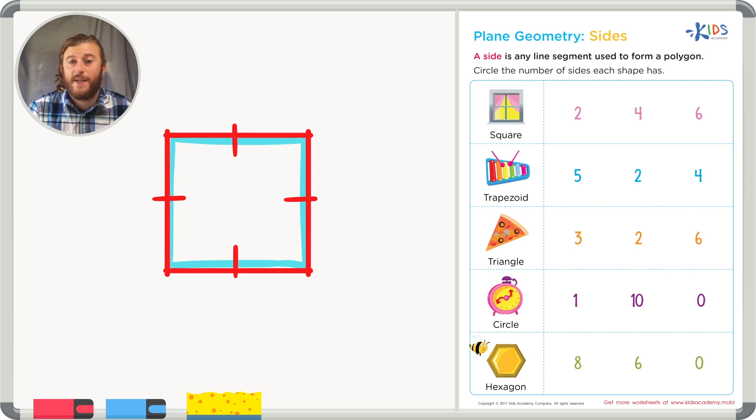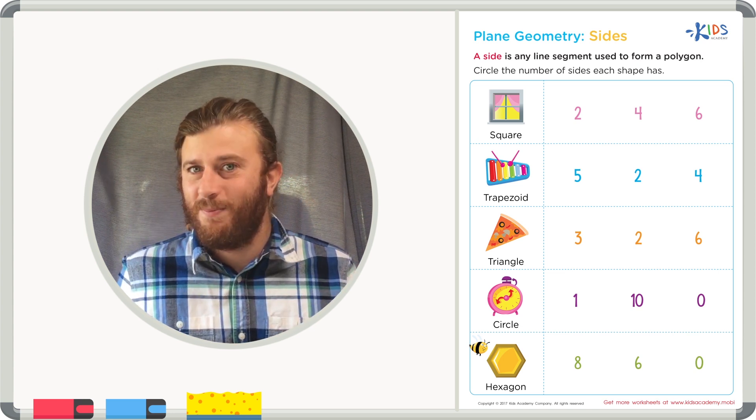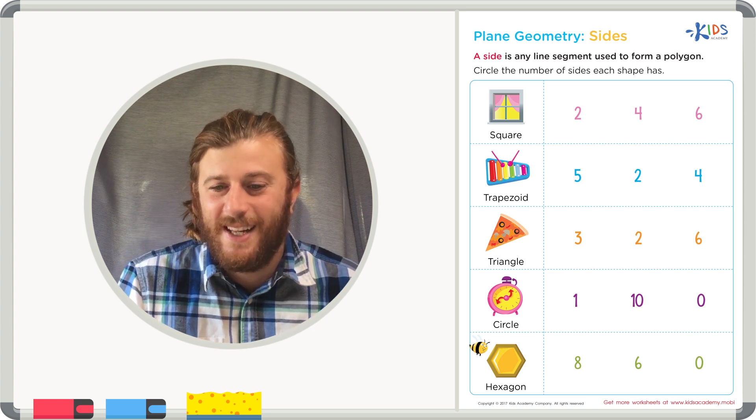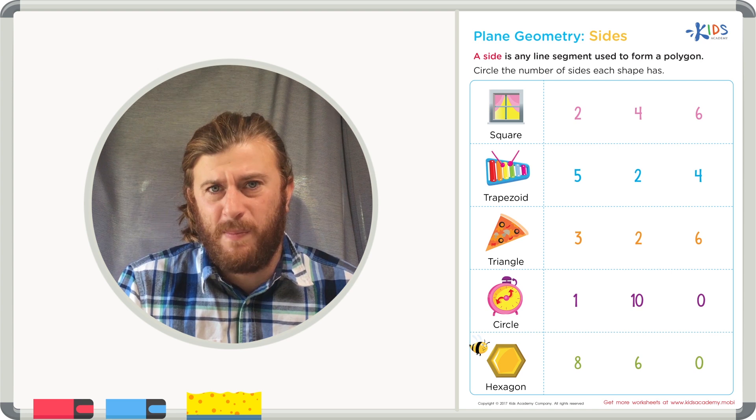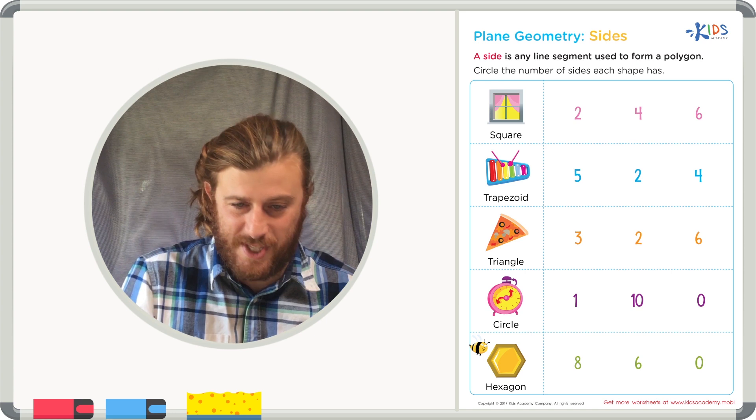Let's take a look at the examples on the worksheet and see how many sides these shapes have. Our first example is a square. Let's count the sides on this picture and let's draw a square too, to make sure we have the correct number of sides.